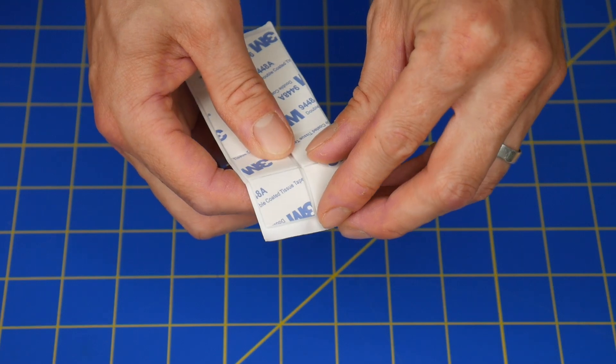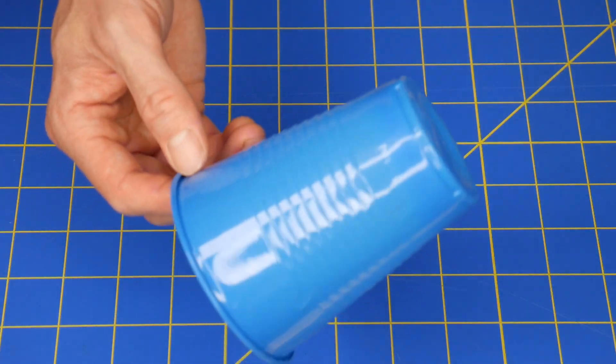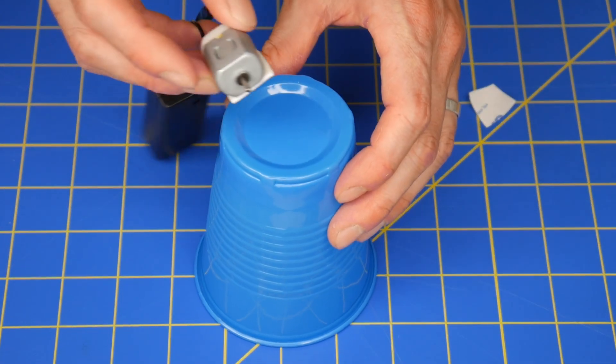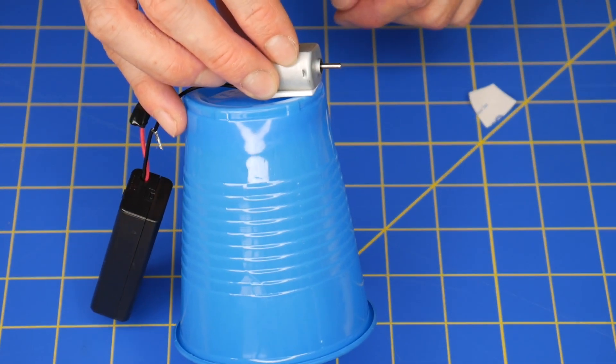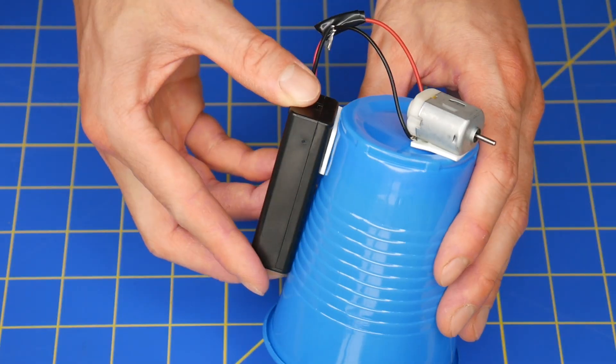Next get a one inch adhesive square, a 12 ounce plastic cup or similar, attach the motor somewhere near the top of the cup with the motor shaft hanging over the edge, and stick the battery holder to the side.